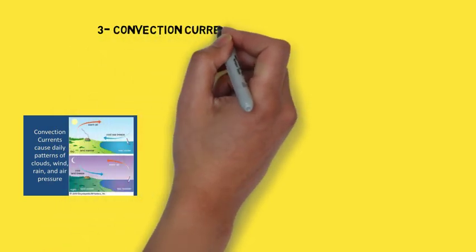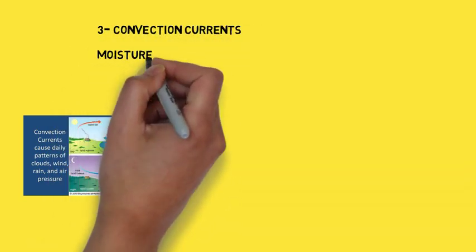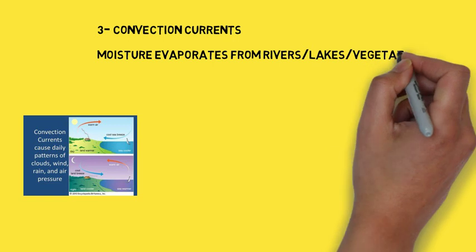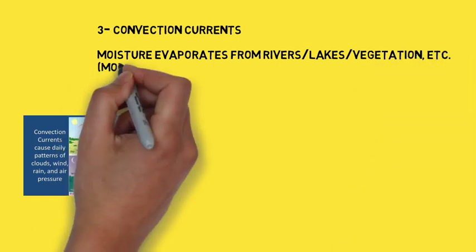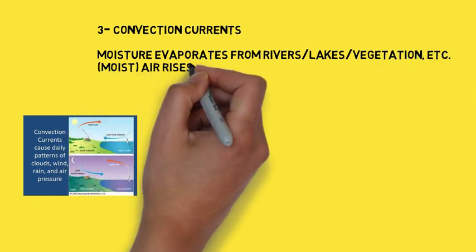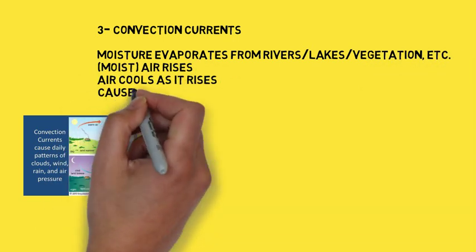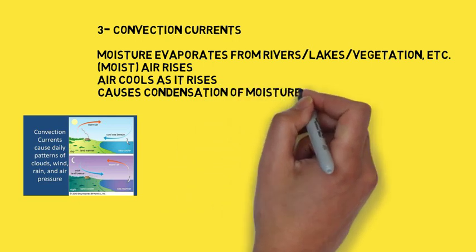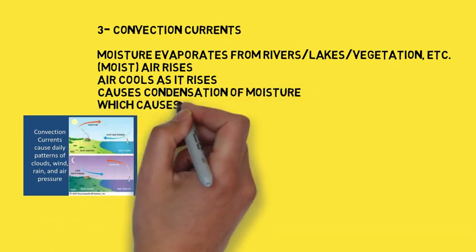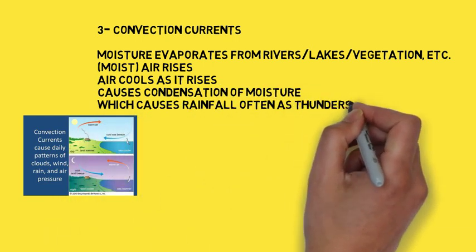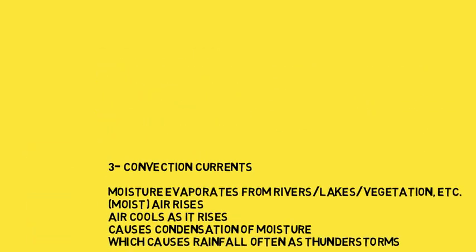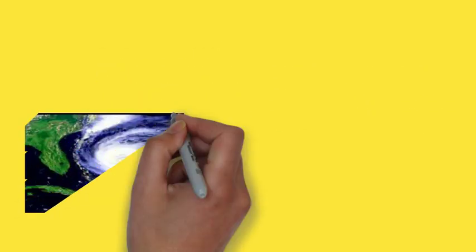Convection currents: moisture evaporates from rivers, lakes, and vegetation. The moisture rises, air cools as it rises, causing condensation of moisture, which causes rainfall, often as thunderstorms. Peshawar and Rawalpindi receive rainfall from convection currents.